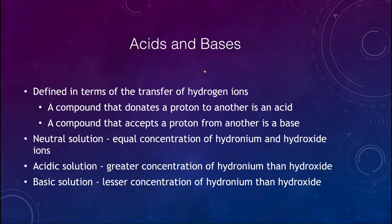Acids and bases are defined by hydrogen ions and the transfer of those hydrogen ions. Something that donates a proton — which is a hydrogen ion — to another object is an acid. The compound that accepts the proton is a base. So acids are losing a proton and bases are gaining a proton.